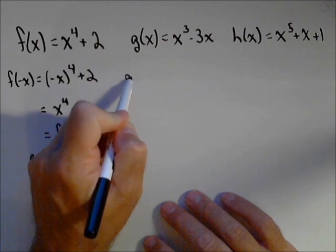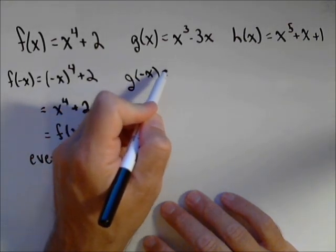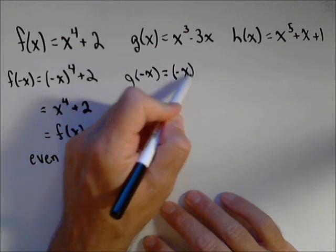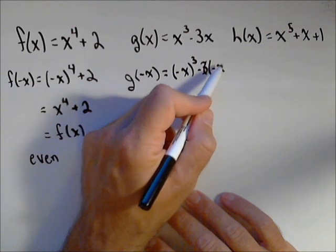Odd. Again, we're going to start the same way. We're going to calculate g of negative x. So we're going to put negative x's in for our x. We get negative x cubed minus three times negative x.